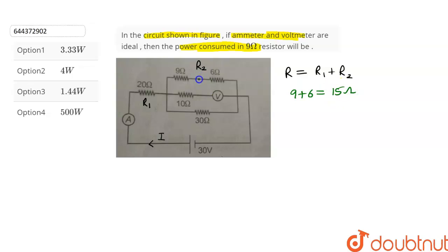And this 15 ohm resistor will be connected in parallel with this 10 ohm resistor and this 30 ohm resistor. So R2 will be calculated as 1 upon R2 is equal to 1 upon 15 plus 1 upon 10 plus 1 upon 30. And after simplifying we get R2 is equal to 5 ohms.